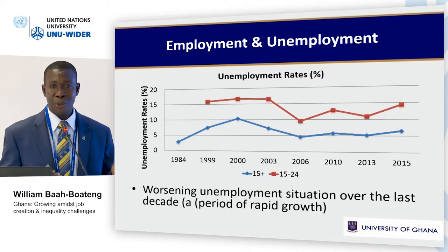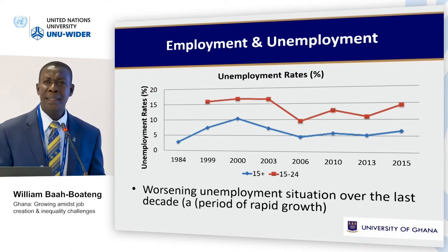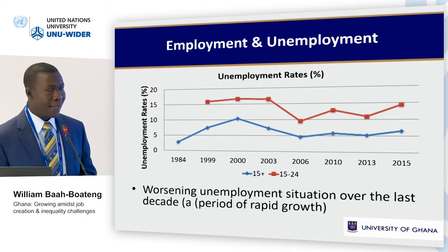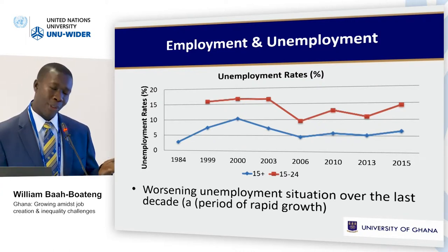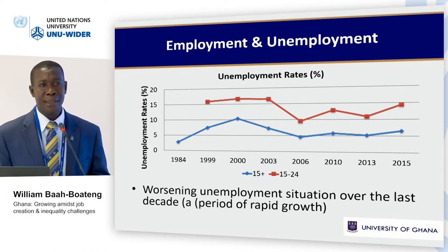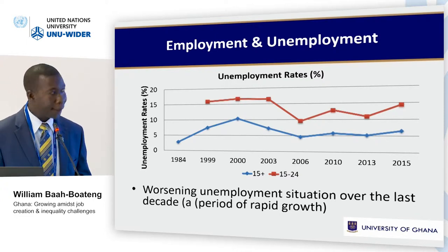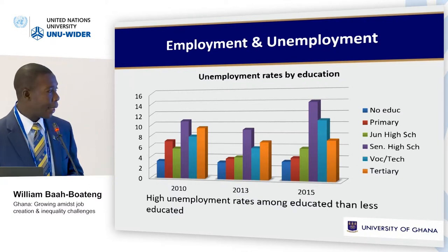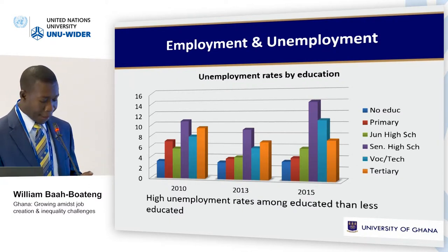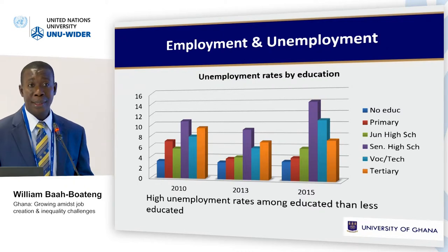On unemployment rates, since 2006 we seem to be having a worsening unemployment situation. The youth unemployment rate — shown in red — and the overall rate for those 15 and above — shown in blue — show that the overall unemployment rate in 2015 is about 6.5 percent, while youth unemployment is around 15 percent. Notably, unemployment rates happen to be higher among the educated than the uneducated, and the highest unemployment is among those with secondary or high school education.